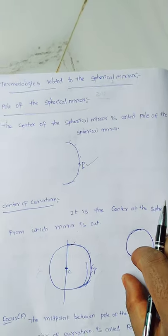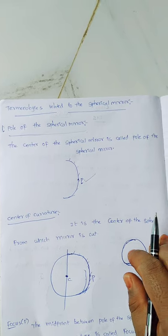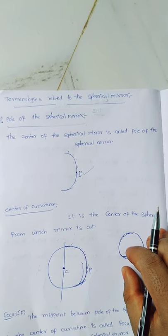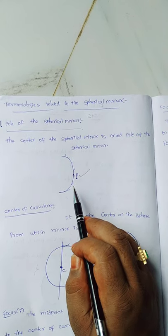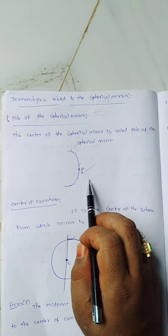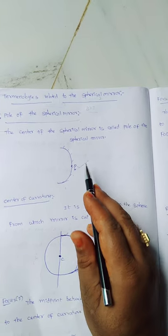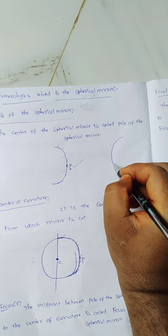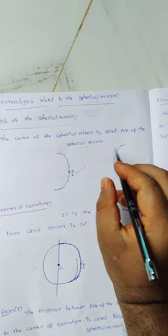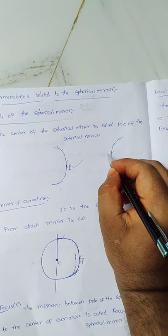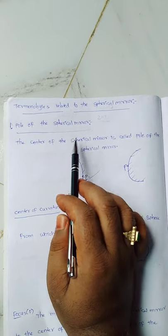Next, I am going to discuss some different terminologies related to the spherical mirror. The first one is the pole of the spherical mirror. These terminologies are the same for both concave mirror and convex mirror. For example, taking a convex mirror — the inside surface is silver-coated — and we mark the point P.